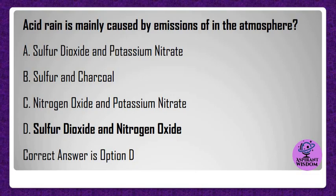Acid rain is mainly caused by emissions of which substances in the atmosphere? A) Sulfur dioxide and potassium nitrate, B) Sulfur and charcoal, C) Nitrogen oxide and potassium nitrate, D) Sulfur dioxide and nitrogen oxide. Correct answer is option D.